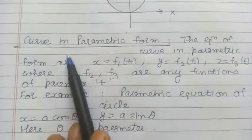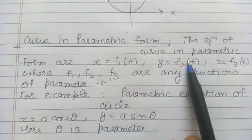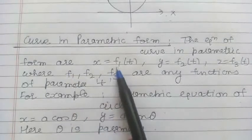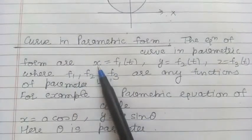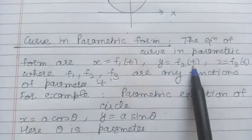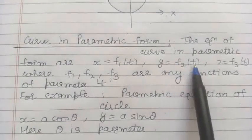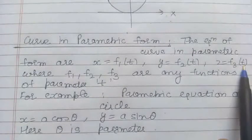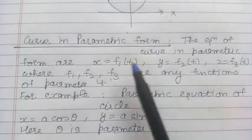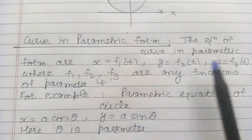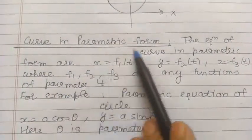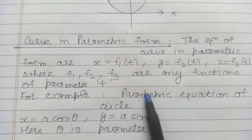Next, what is a curve in parametric form? In general, the equation of a curve in parametric form: if we have a point on the curve with coordinates x, y, z, then x is a function of t, denoted f₁(t); y is also a function of parameter t, denoted f₂(t); and z is also a function of parameter t, denoted f₃(t). These three equations, where f₁, f₂, f₃ are functions of parameter t, give the equation of the curve in parametric form.